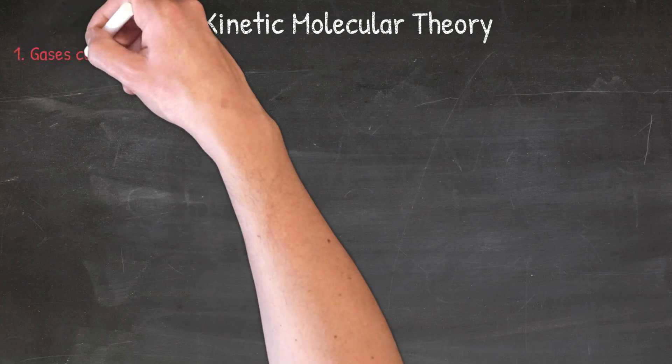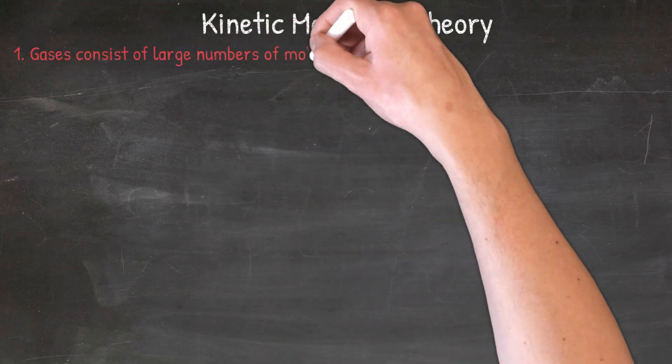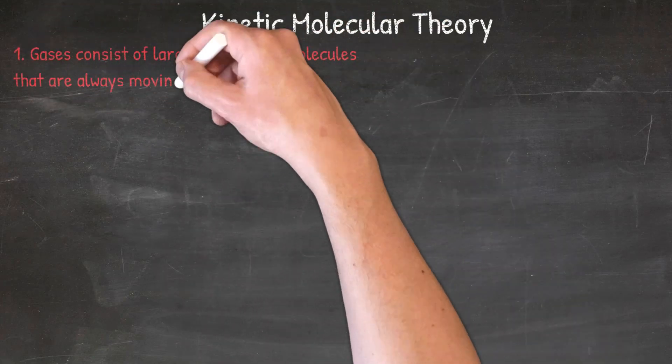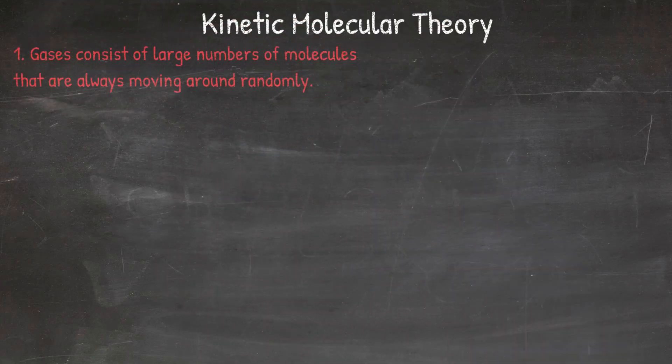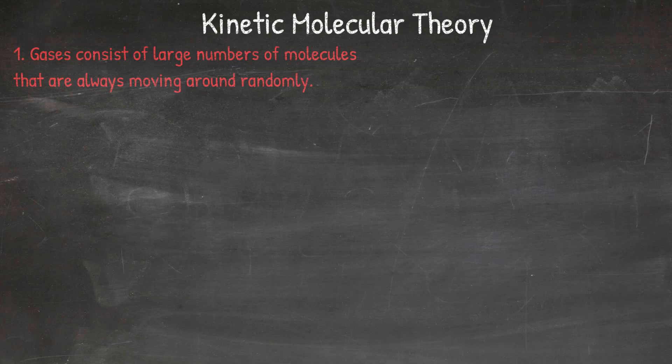Number one is that gases consist of a large number of molecules that are always moving around randomly. Simply put, this just means that gas molecules are always moving, and we cannot predict the path that they will take.